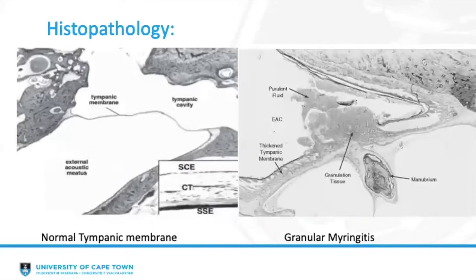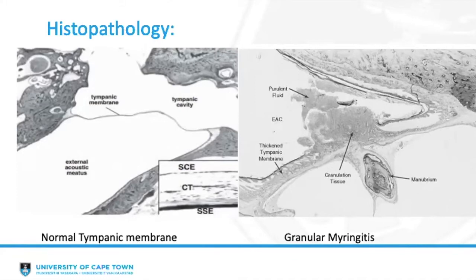From a histopathological point of view, the pars tensa of the tympanic membrane consists of three layers: a lateral layer of squamous epithelium, a middle layer of connective tissue or lamina propria, and an innermost layer of simple cuboidal epithelium. In granular myringitis, a non-specific insult to the outer squamous epithelium and lamina propria results in impaired healing and impaired re-epithelialization, with subsequent edematous granulation tissue formation, neocapillary formation, and diffuse infiltration of chronic inflammatory cells growing on the lateral surface of an intact tympanic membrane with no covering epithelium.